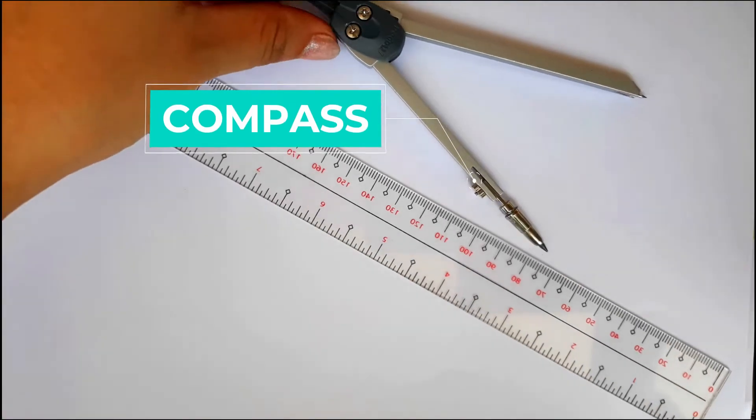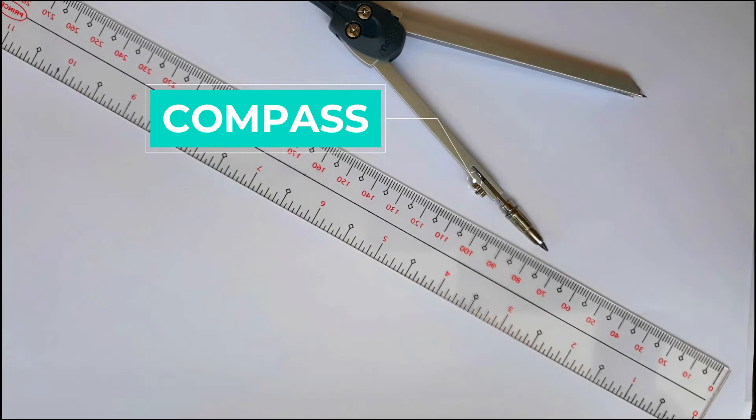Second, we have the compass. It is an instrument with two metal arms. One of the arm has metal endpoint, and the other arm has a screw arrangement which can hold a pencil tightly. The distance between the two arms can be adjusted. It is used to draw an angle, circle, arc, etc.